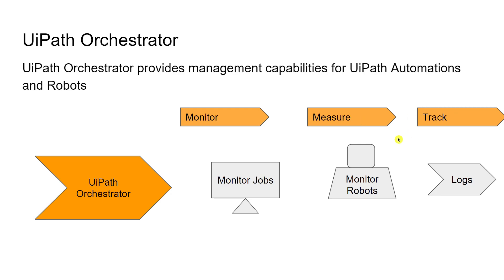You can monitor jobs, monitor your queues, monitor your robots, and monitor the entire automation framework. In a company there could be multiple automations running at the same time on different machines, and UiPath Orchestrator is the place where you can do all of this easily. Think of security rooms — they have multiple cameras around a building, and you sit at one place and monitor all the feeds. Similarly, you can monitor robots, running jobs, and logs — what happened, why it failed, how it succeeded.